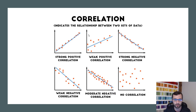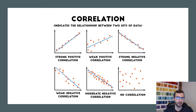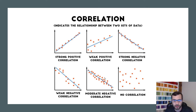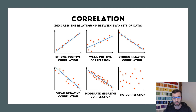Maybe a slightly weaker positive correlation might be the level of extroversion and the number of friends somebody has — probably still a fairly strong relationship, but not quite as strong as height and weight. So we've got a strong positive correlation, a weaker positive correlation, a strong negative correlation, a moderate negative correlation where dots are more spread out, and then no correlation, where as one variable increases the other is just random and sporadic.